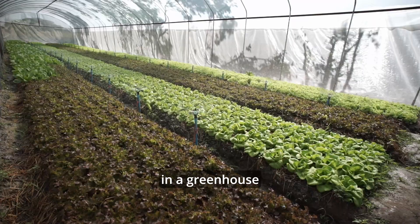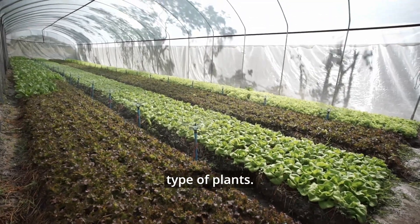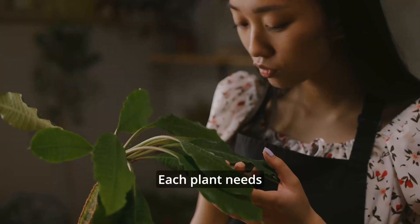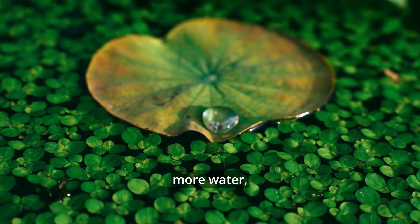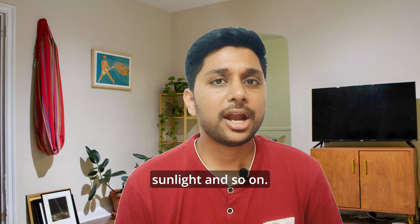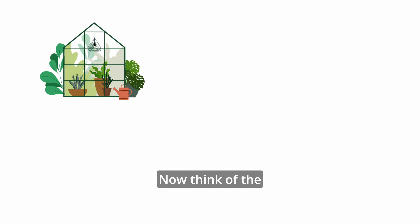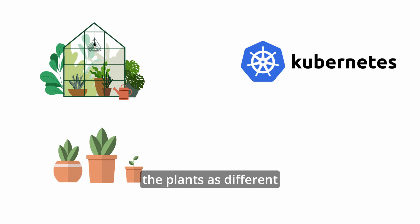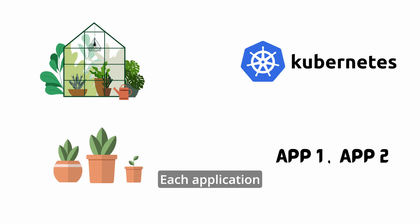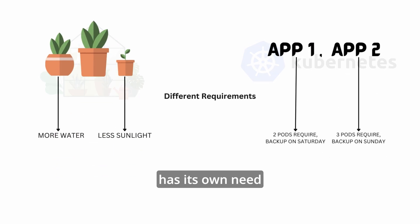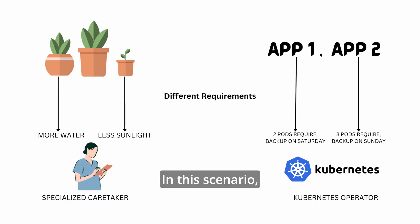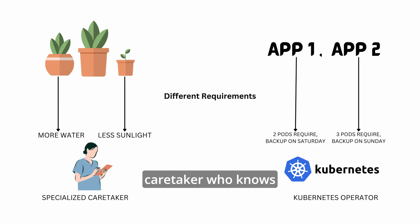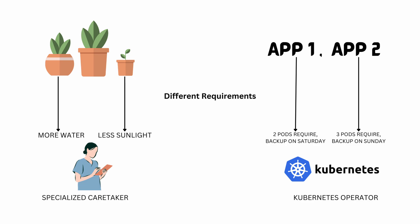Imagine you are in a greenhouse full of different types of plants. Each plant needs special care — some need more water, some need less sunlight, and so on. Now think of the greenhouse as a Kubernetes cluster and the plants as different applications. Each application has its own needs and requirements. In this scenario, a Kubernetes operator is like a specialized caretaker who knows exactly what each type of plant needs.